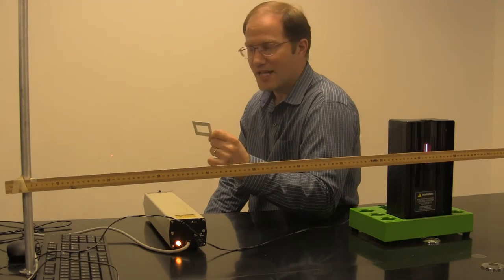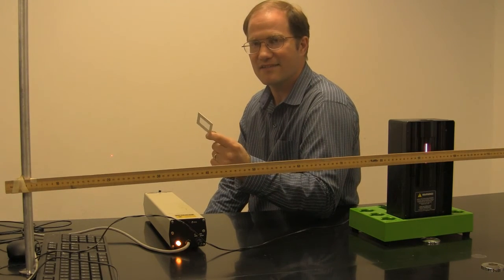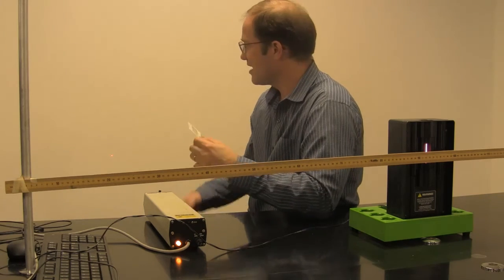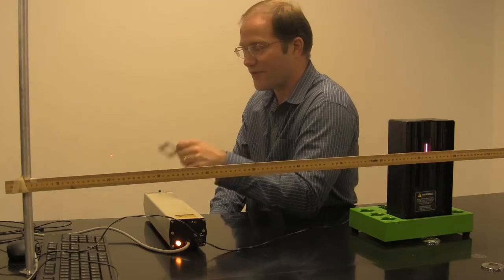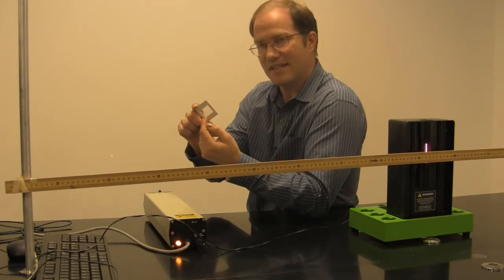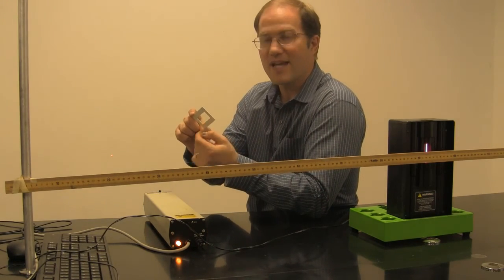lambda, the wavelength, is equal to d sine theta. With a known wavelength and the average theta produced when I put this diffraction grating in front of it, I can calculate d, the slit distance of the diffraction grating.